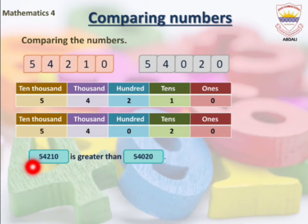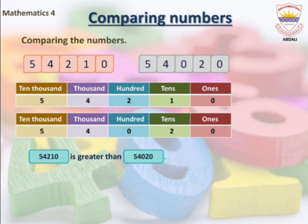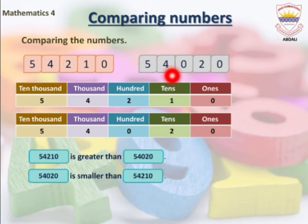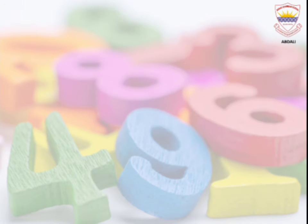We write it as: 54,210 is greater than 54,020, and we also write it as 54,020 is smaller than 54,210.